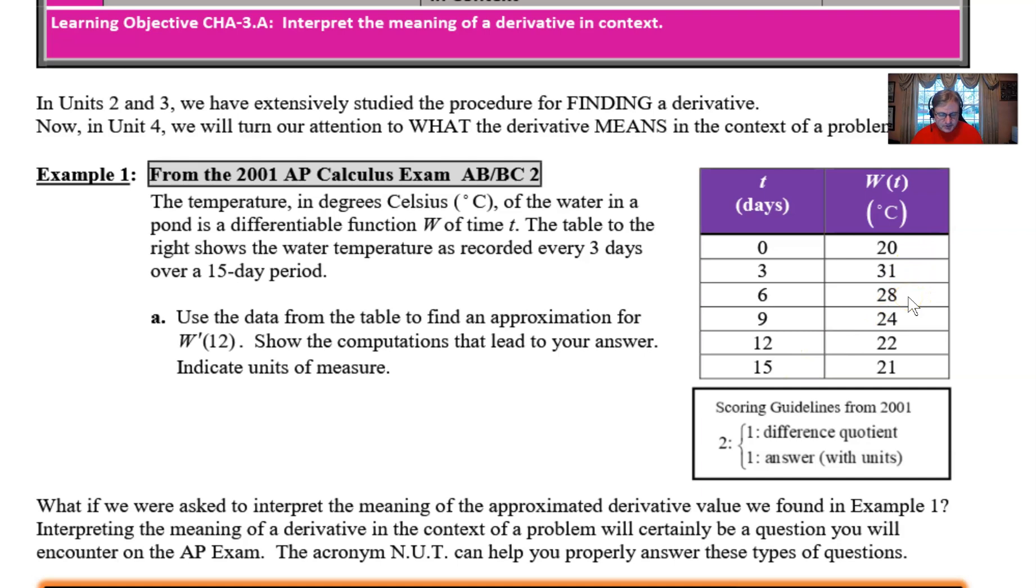And then we have some temperature over here. These are Celsius temperatures, so the water is not necessarily freezing. And it kind of fluctuates a little bit, as you can tell, over those 15 days. The question in part A reads: use the data from the table to find an approximation for W prime of 12, show the computations that lead to your answer, and indicate units of measure.